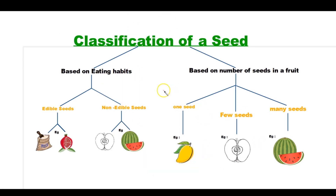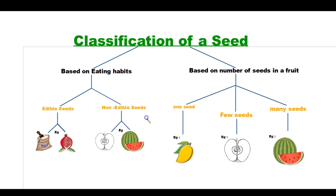Our last topic is the classification of a seed. A seed is mainly divided into two types based on eating habits — seeds which we eat are called eatable seeds, and seeds which we do not eat are called non-eatable seeds. Examples of eatable seeds are rice and pomegranate, whereas examples of non-eatable seeds include apple and watermelon. This is the first classification of a seed based on eating habits.